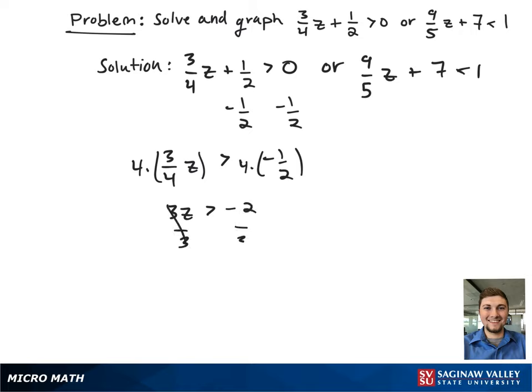Next, we're going to get z by itself by dividing both sides by 3. So our left hand side of the inequality is now z is greater than negative 2/3.